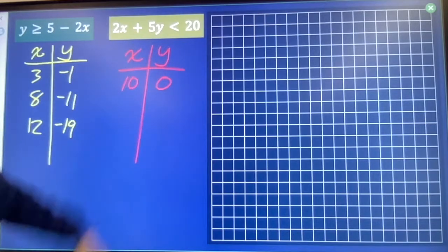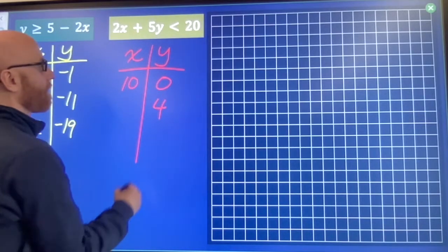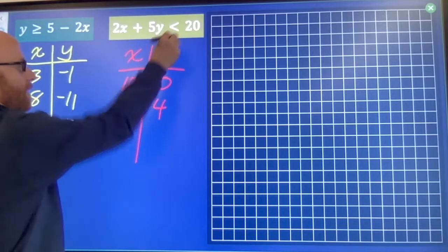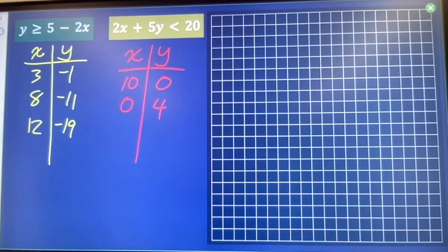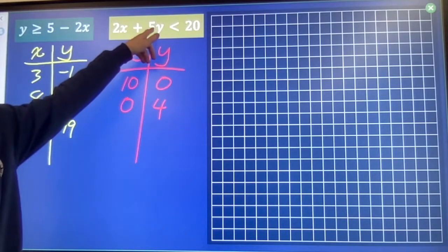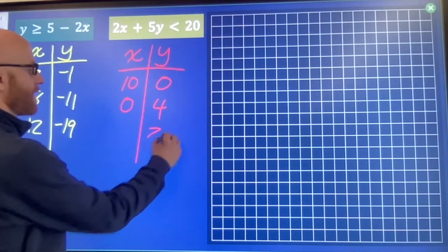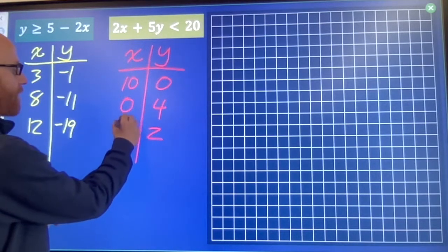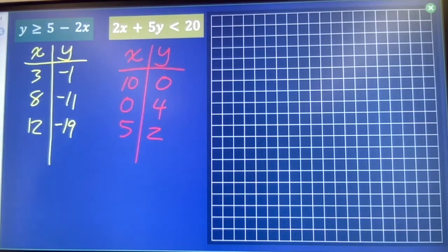Similarly, if I make y be 4, 20 plus 0 is 20. Now let me find one more point. If I say 5 times 2, that's 10. I'm going to need 2 times 5 to be 10 plus 10 is 20.